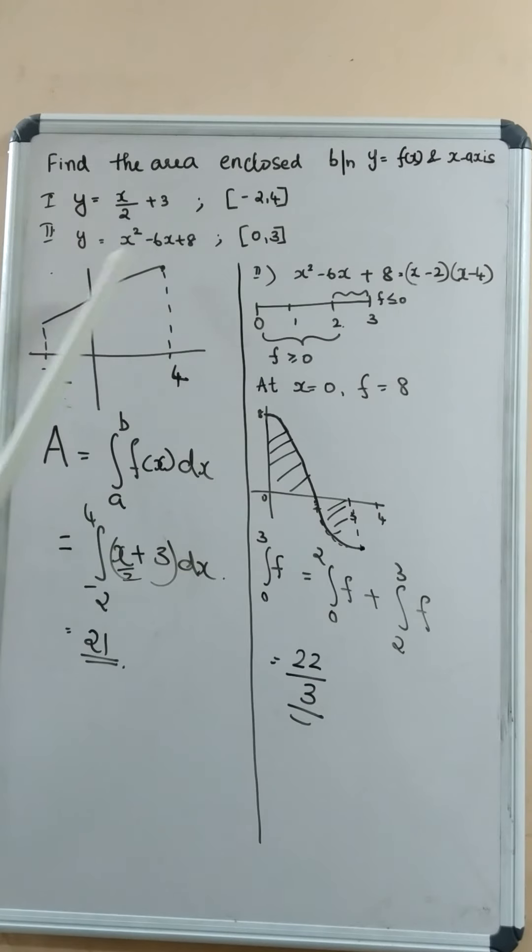Where y equal to x by 2 plus 3 in the graph and it is a straight line and we have to find the area enclosed by this curve and the x axis from x is equal to minus 2 to 4.